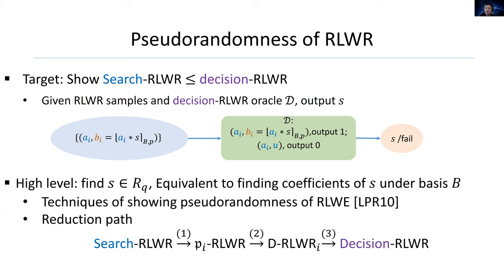Our techniques are similar to that of LPR-10 which shows pseudorandomness of ring LWE. Our reduction path is as follows. Step 1 shows if search ring LWR is hard, then the intermediate search problem Π_i ring LWR is also hard. Step 2 shows a reduction from Π_i ring LWR to an intermediate worst-case decision problem D ring LWR sub i. And step 3 shows the reduction from D ring LWR sub i to the average-case problem decision ring LWR. We remark that step 3 contains two soft steps which will be explained next.